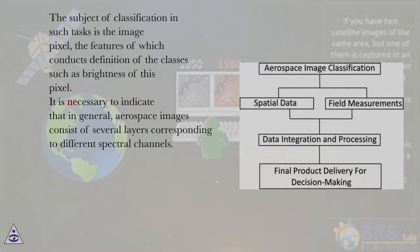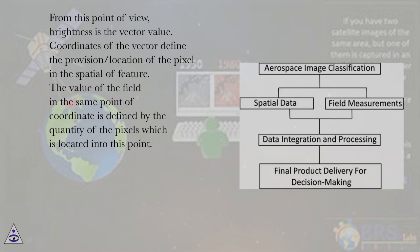The subject of classification in such tasks is the image pixel, the features of which conduct the definition of the classes, such as the brightness of this pixel. It is necessary to indicate that in general, aerospace images consist of several layers corresponding to different spectral channels. From this point of view, brightness is a vector value, and the coordinates of the vector define the location of the pixel in the feature space.